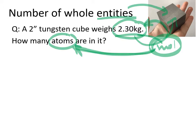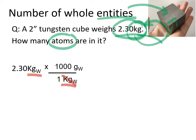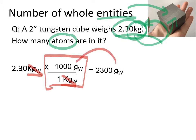We are looking for the number of atoms, so we start with the number given. We use conversion factors — this way you'll never put the numerator where the denominator should be. Our first conversion factor has kilograms on the bottom to cancel out, since molar masses are in grams per mole. We put kilograms on the bottom and grams on top, converting to grams. I'm using the label 'W' for tungsten on the unit to avoid confusion when dealing with multiple substances.